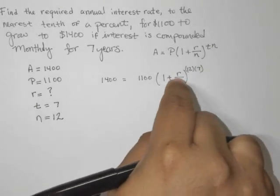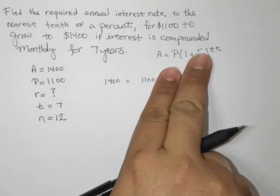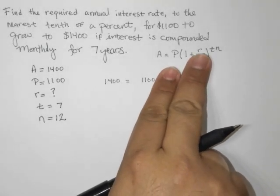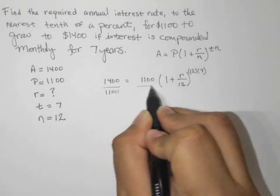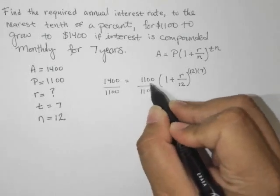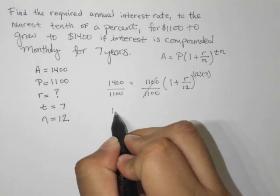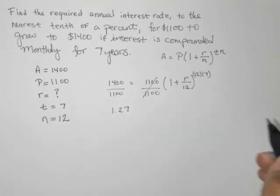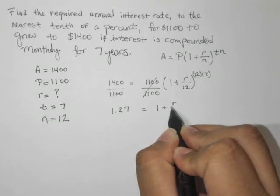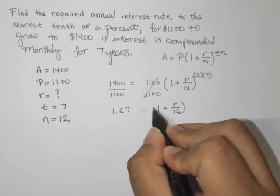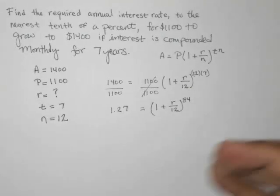Now what we want to do is try to isolate this R. So the first thing we can do before we even touch the exponents is to divide both sides by the $1,100. So let's go ahead and do that. And we're left here with 1.27, and it's going to equal 1 plus R over 12, raised to the 12 times 7, which is 84.